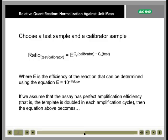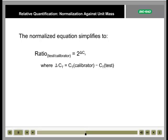If we assume that efficiency is perfect, or 100%, then E in the equation simplifies to 2, and we can rearrange the equation as follows. The ratio is equal to 2 raised to the power of delta CT, where delta CT is the difference in CT values between the calibrator and test sample. This equation can be entered into a spreadsheet for automated analysis of multiple samples.